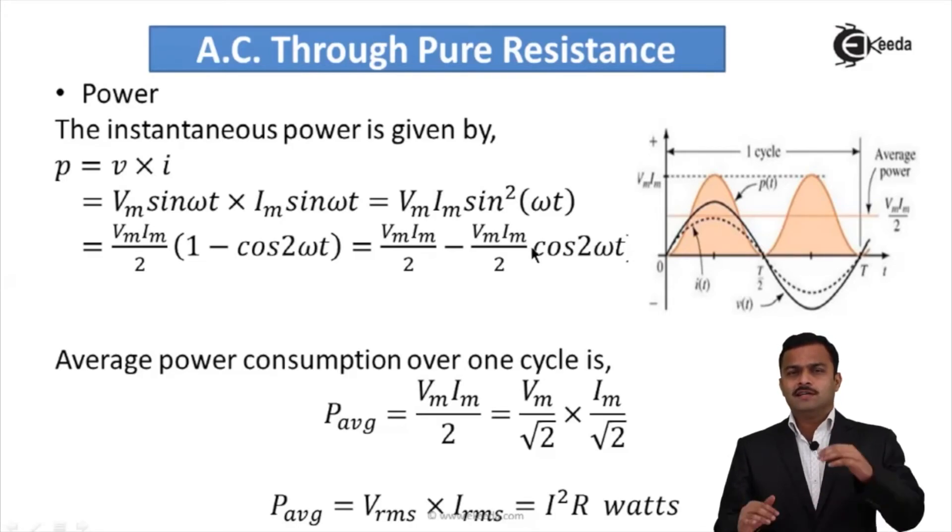It has positive and negative half cycles, so positive values and corresponding negative values are present. If I take the average, it becomes zero, so this term vanishes. Average power becomes VmIm/2. Now this 2 I am splitting into √2 × √2.